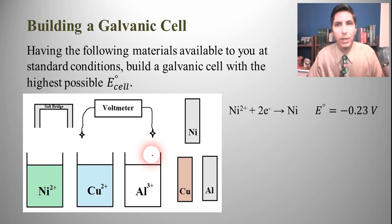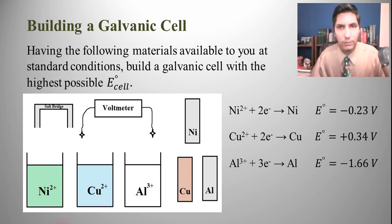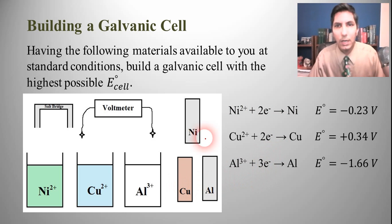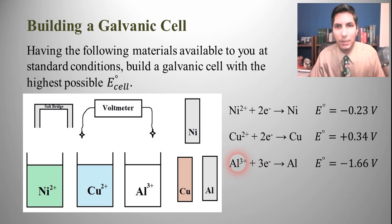Let's take a look at the standard reduction potentials for those three reduction half-reactions. If we have nickel ions being reduced into nickel, that's −0.23 volts. Copper²⁺ ions being reduced into copper metal is +0.34 volts. And aluminum ions being reduced into aluminum metal would be −1.66 volts.